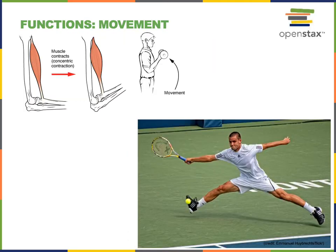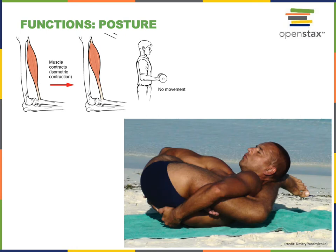Movement is a major function of the muscular system. For example, contraction of a skeletal muscle pulls on a bone at an insertion, which is where the tendon attaches to a bone from a muscle. Another major function of the muscular system is posture.